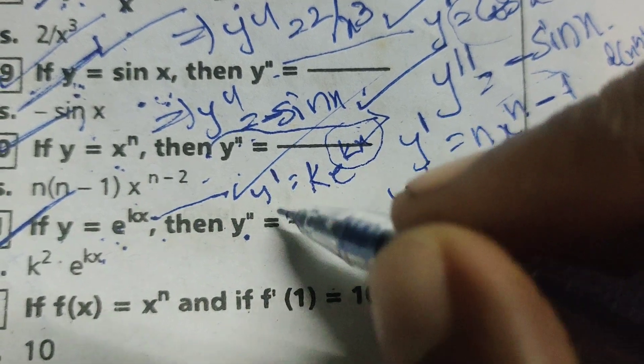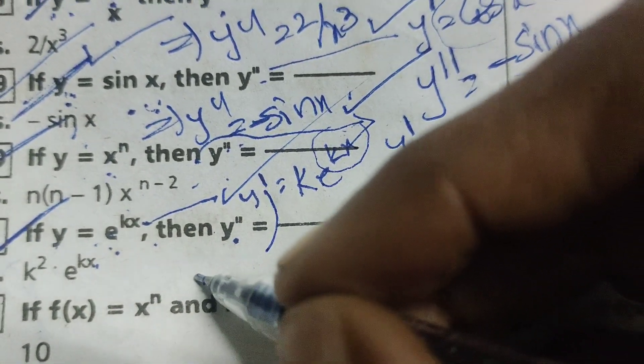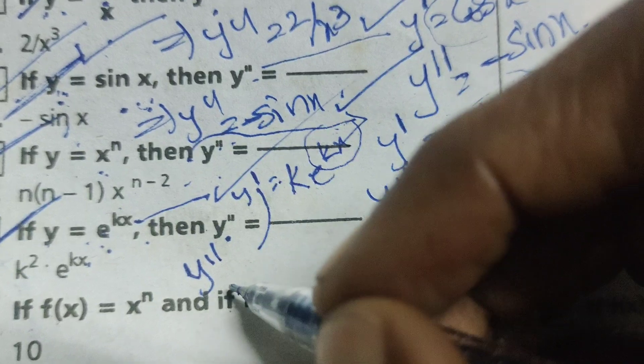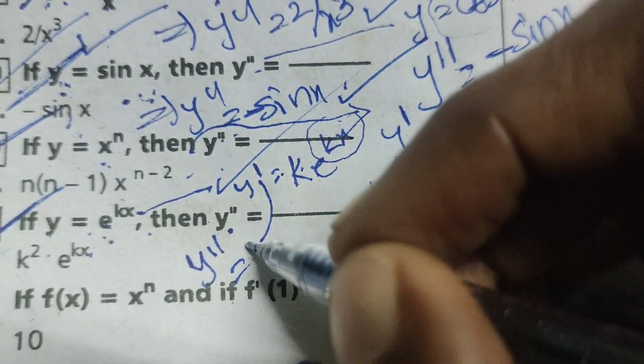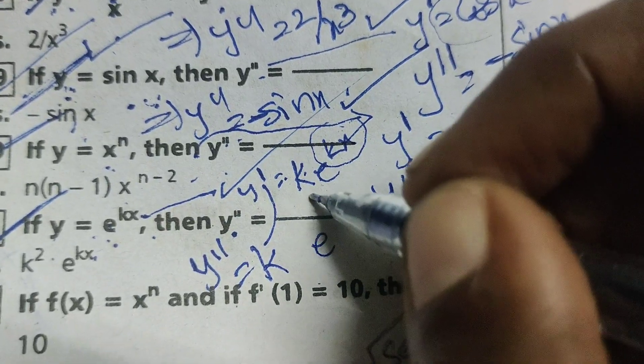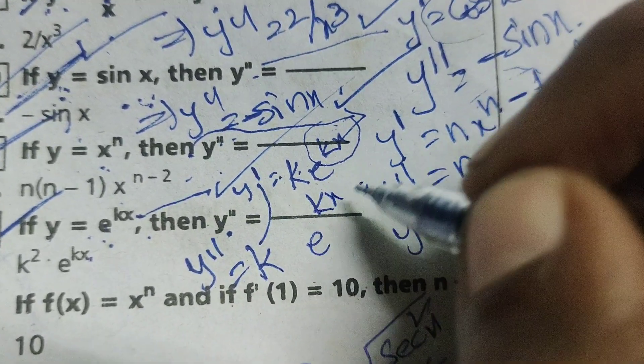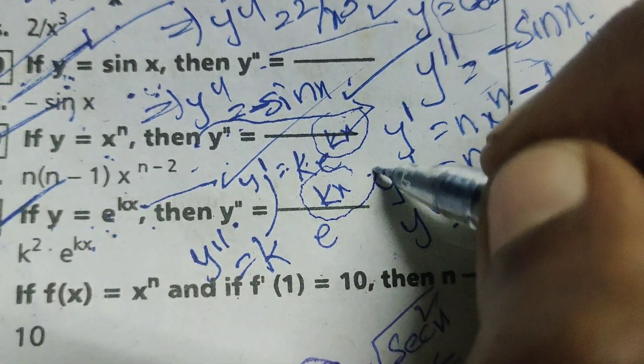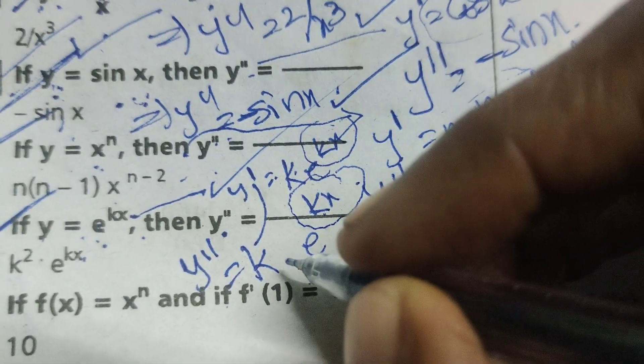Again, differentiating this, y double dash equals k times e power kx. Now, again differentiating this kx, we will get k.